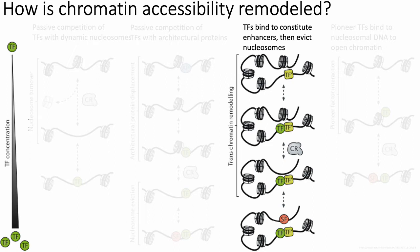The third approach is through transcription factors binding to and recognizing enhancers that are constitutively open. Certain strong enhancers might have a relatively strong transcription factor — labeled here as TF prime — bound to that enhancer, essentially keeping it in an open chromatin state. Some additional transcription factor may then come in, bind to this enhancer, and recruit additional chromatin remodeling factors to further open up the region for transcription.